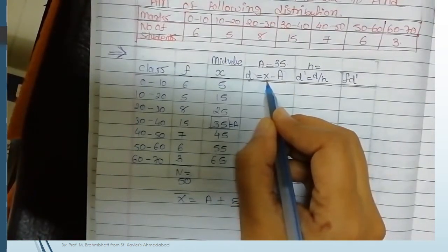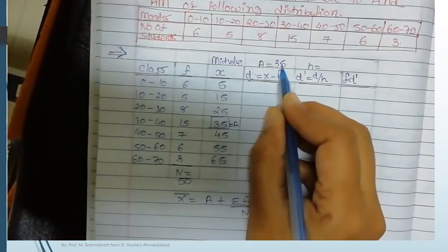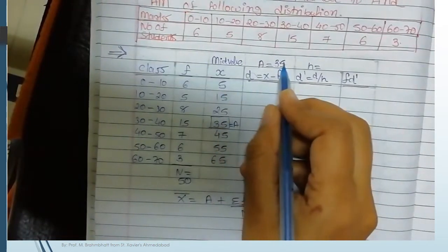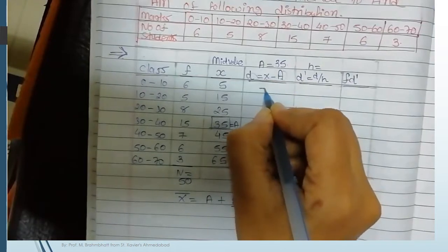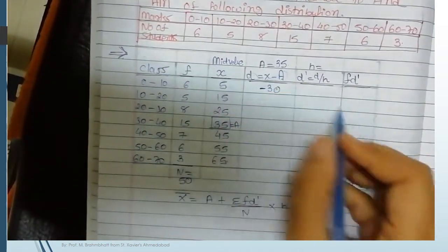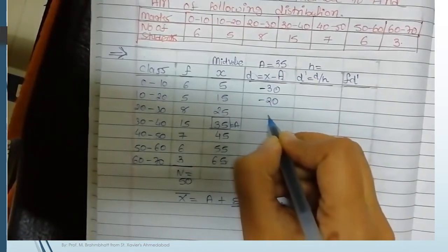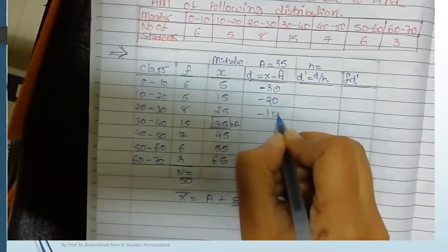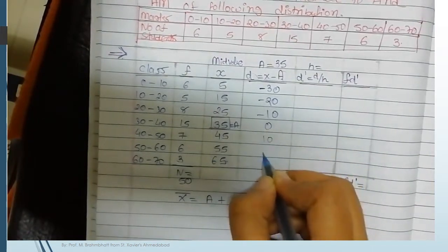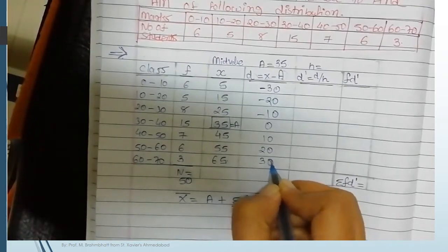With A equals 35, we compute d for each x value: 5 minus 35 is minus 30; 15 minus 35 is minus 20; similarly minus 10, 0, 10, 20, and 30.